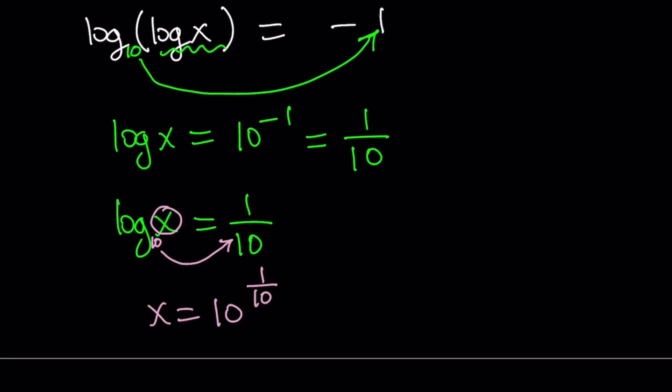From here, we get x equals 10 to the power 1 over 10, and that's going to be our only solution. We can write 10 to the power 1 over 10 as the tenth root of 10, which is a small number — if you use a calculator to evaluate that, you'll get the answer.